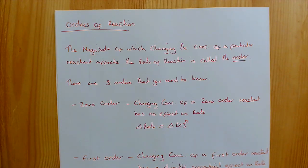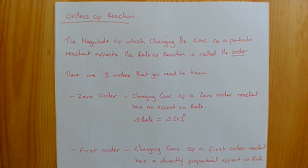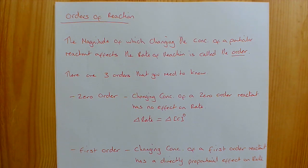The first thing we need to look at in Year 13 kinetics is the idea of orders of reaction. Fundamentally, the order of a reaction when we're talking about reactants is the magnitude of effect on the rate that occurs when you change the concentration of that reactant. So if we double the concentration, does it double the rate, quadruple the rate, or have no effect?